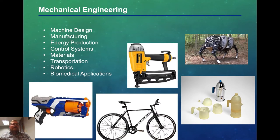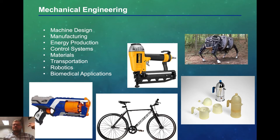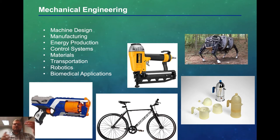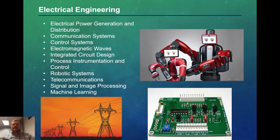Let's talk about mechanical engineering. Mechanical engineering may solve problems like machine design, manufacturing, energy production, and control systems — which is my specialty. Notice I'm an electrical engineer but my specialty is listed under mechanical engineering. Materials, transportation, robotics, biomedical applications — all of these are examples of mechanical engineering in action.